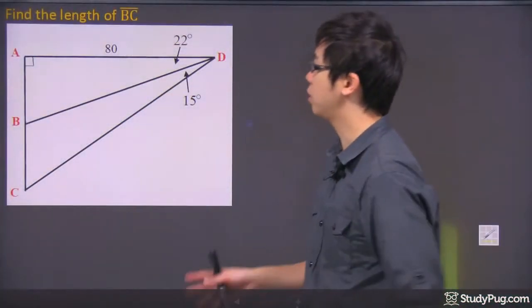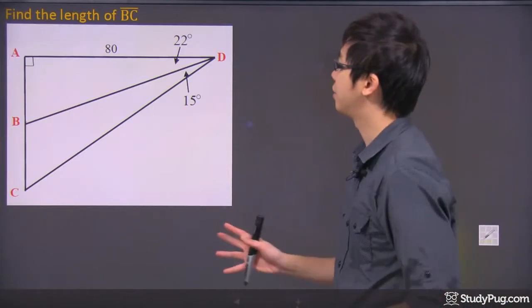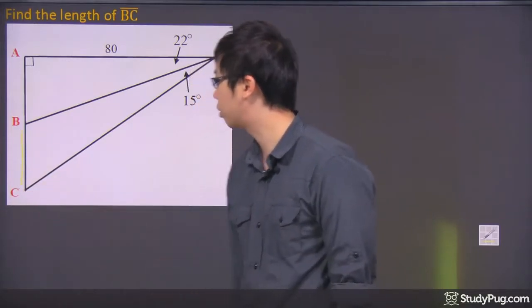Hi, welcome to this question right here. So this one here, you can use whatever you like - SOHCAHTOA, you can use sine, cosine, tangent, as long as you can find the length from B to C, which is from here to here.